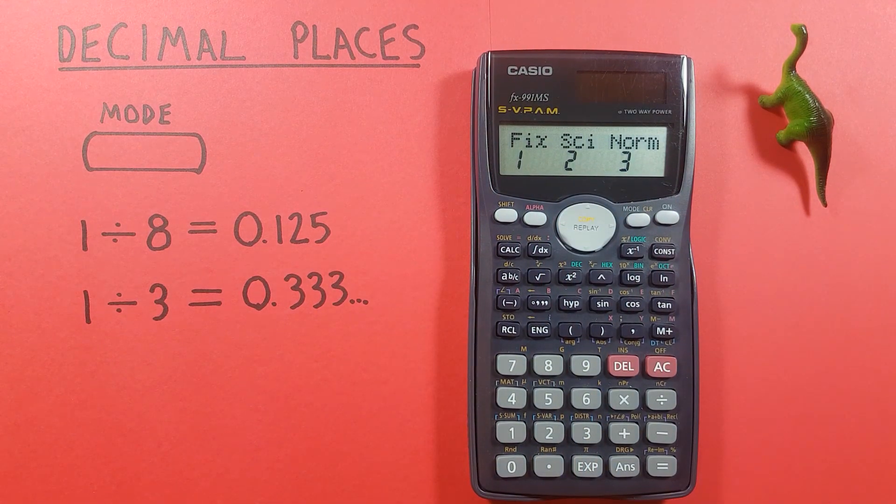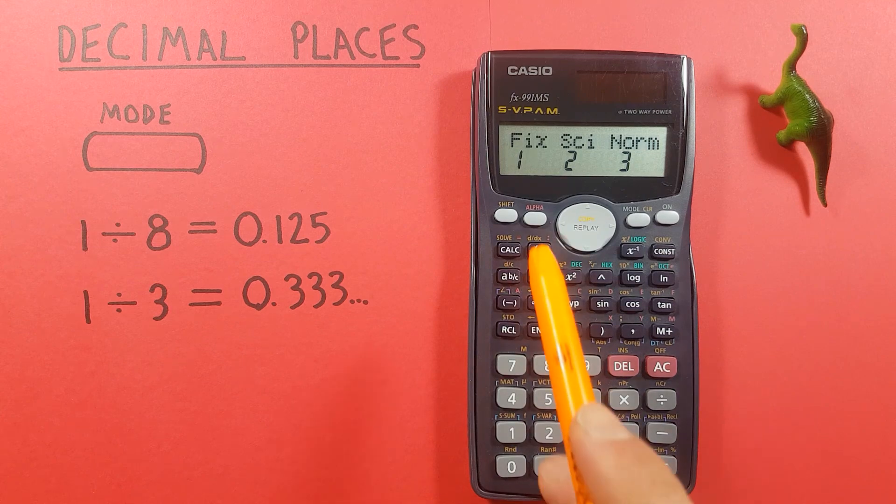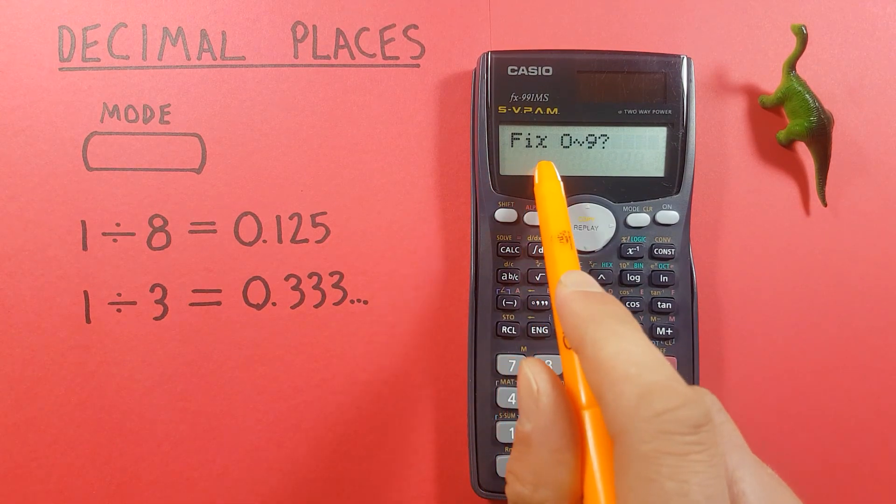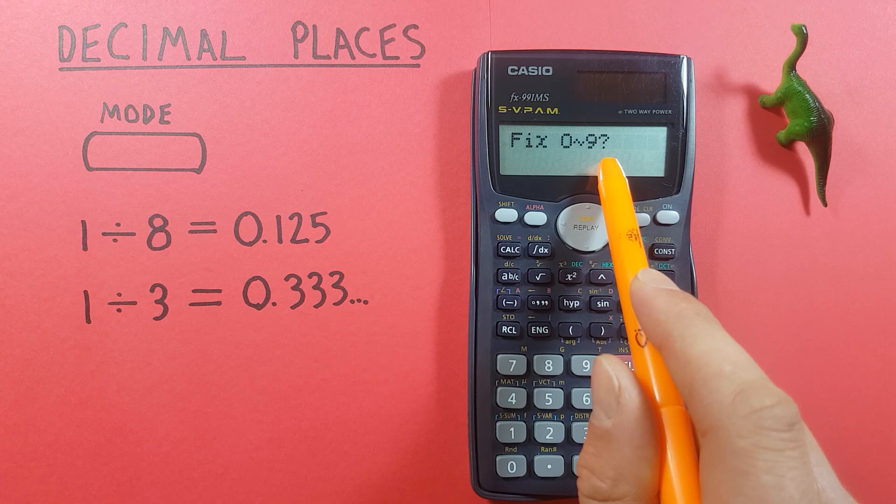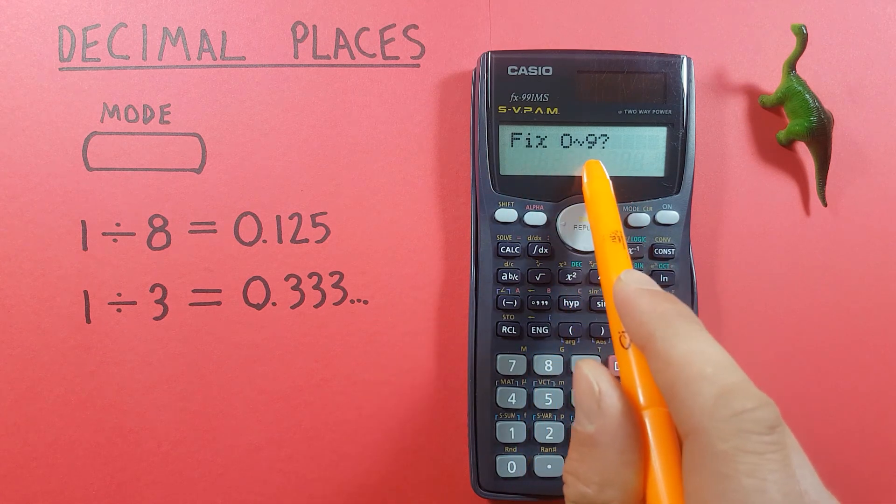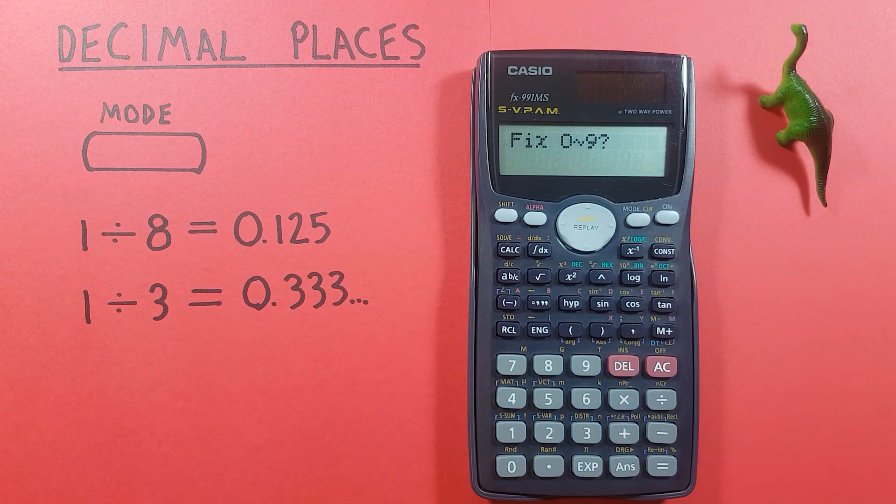And the mode we want is called fix mode. So to get to that we press 1 and then it'll ask us here fix 0 to 9. This is asking how many decimals we want to display. So if we only want to get two decimals in our answer we press 2.